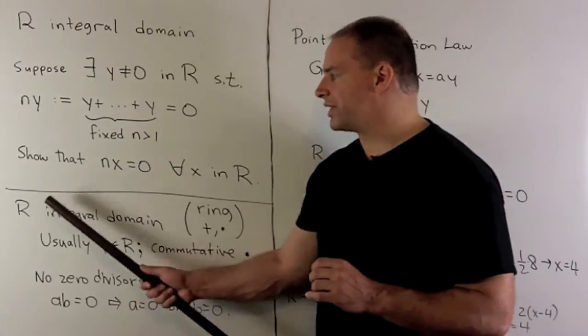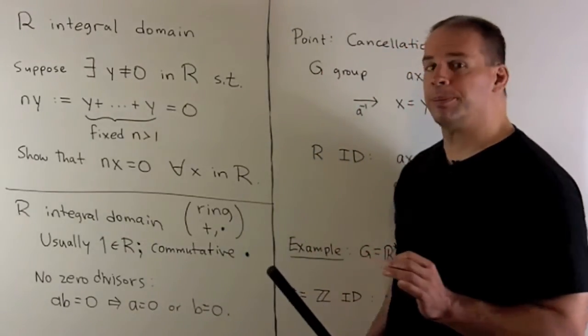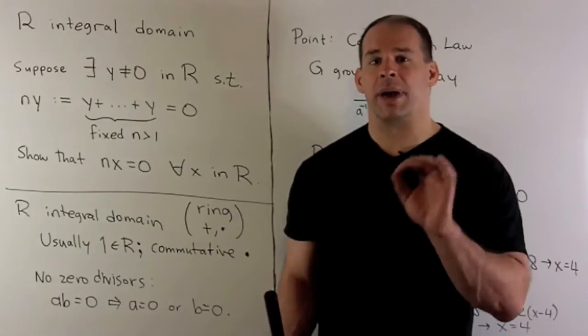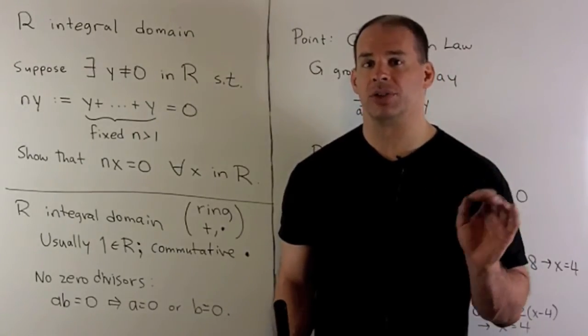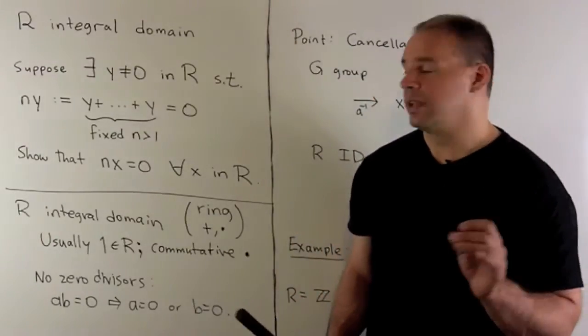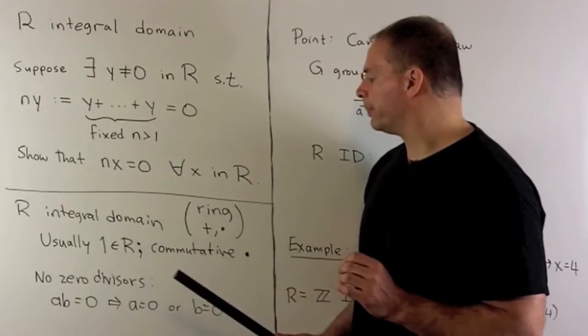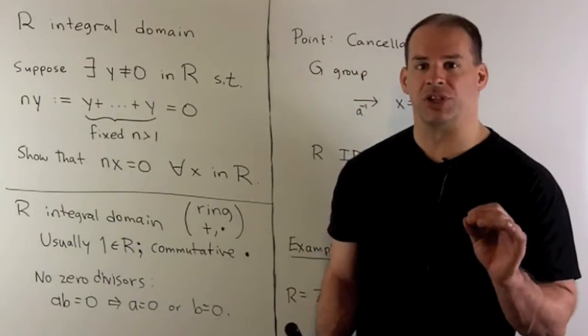R is going to be a set with two operations, addition and multiplication, and enough compatibility conditions between the two so that we have a ring. Usually, we're going to insist that there's a multiplicative identity one in our ring and that the multiplication is commutative.